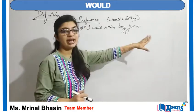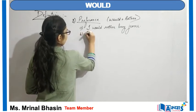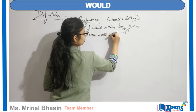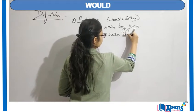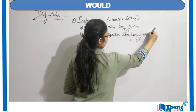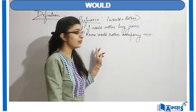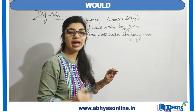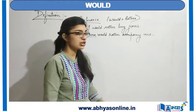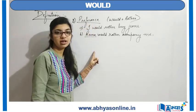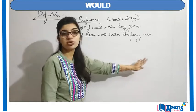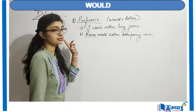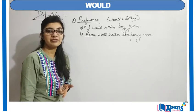Another example: 'Rina would rather accompany me.' This means that if Rina is given a choice to go with me or some other person, I am quite sure she will go with me. Since she is my close friend, she will always choose me. Therefore, I say 'Rina would rather accompany me.' This is the case where 'would' is used for some kind of preference.